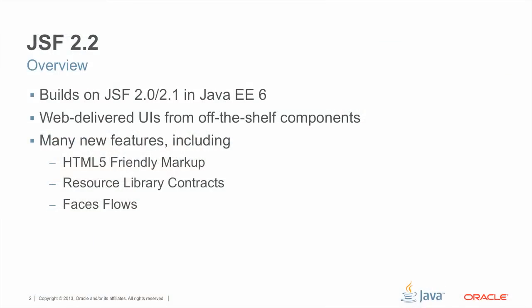JSF is a framework for building web-delivered UIs from off-the-shelf components. JSF 2.2 builds on the features introduced in the previous versions of the specification in Java EE 6 and includes many new features, including HTML5 friendly markup, resource library contracts, and FACES flows.